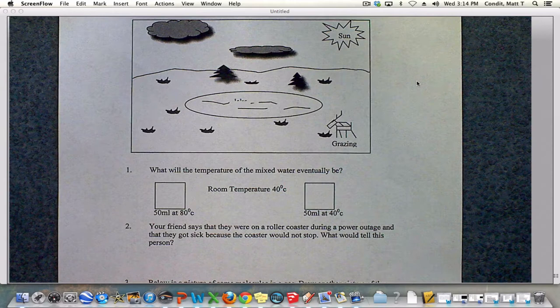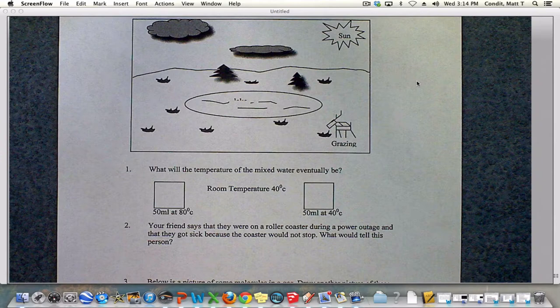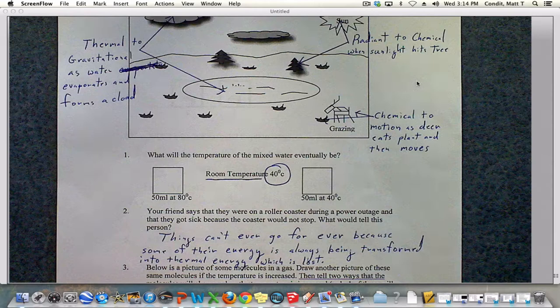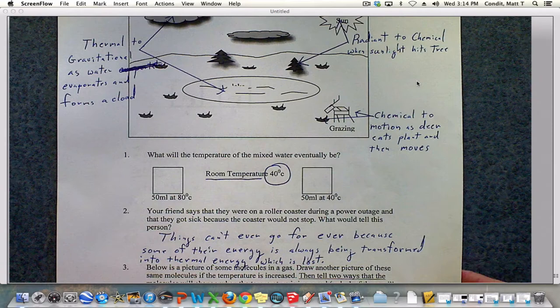Question number two, your friend says that they were on a roller coaster during a power outage and that they got sick because the coaster would not stop. What would you tell this person? You would tell them nicely, things can't go or ever go forever because some of their energy is always going to be transformed into thermal energy, which is lost. There's always some friction that's going to take place.